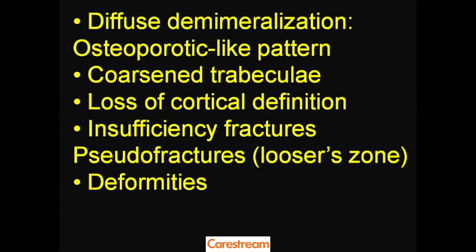The classical radiographic pictures of osteomalacia include: diffuse osteopenia due to demineralization (not reduction in bone mass); coarsened trabeculae with a fuzzy outline because of abnormal osteoid deposited on trabeculae; and loss of cortical definition. These features overlap with osteoporosis, but insufficiency fractures or pseudofractures — Looser's zones — are more common in osteomalacia. Bone softening also makes deformities more common in osteomalacia. History and lab parameters help distinguish osteoporosis from osteomalacia.